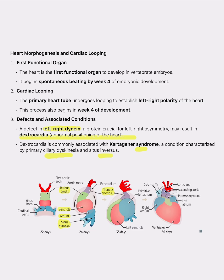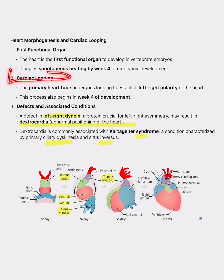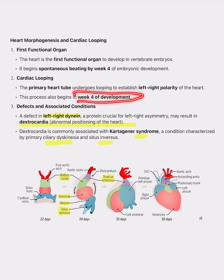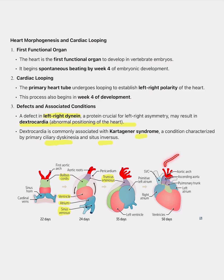Cardiac looping is a process in which the primary heart tube, as you can see here, undergoes looping to establish left-to-right polarity of the heart. This process also begins in the fourth week of development, more precisely on days 23 to 24. Proper looping is essential for correctly aligning the heart chambers and great vessels originating from the heart.